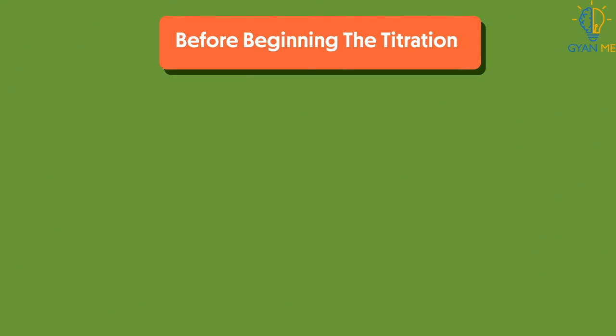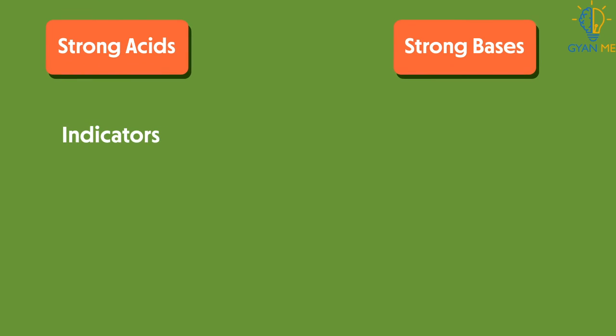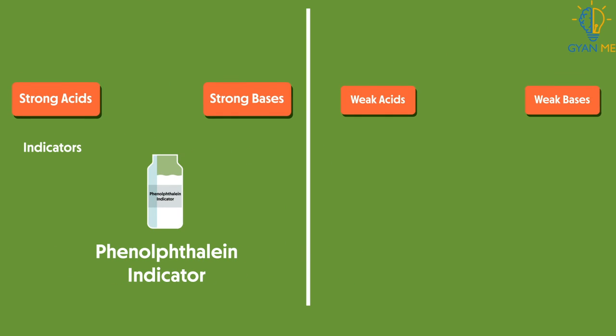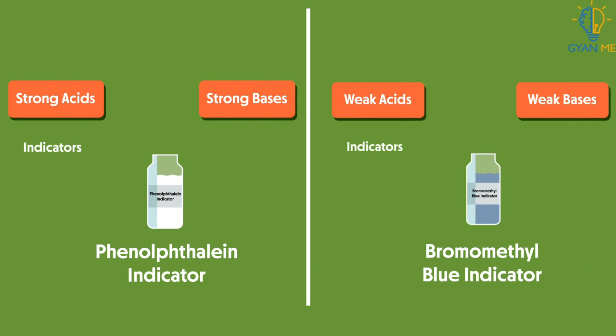Students, before beginning the titration, we choose a suitable pH indicator. Preferably, one that will experience a color change at the equivalence point. For example, for strong acid, strong base titration, we use phenophthalein indicator. And for weak acid and weak base titration, bromomethyl blue indicator can be used.